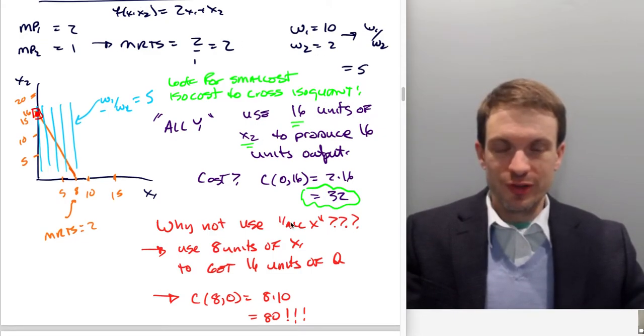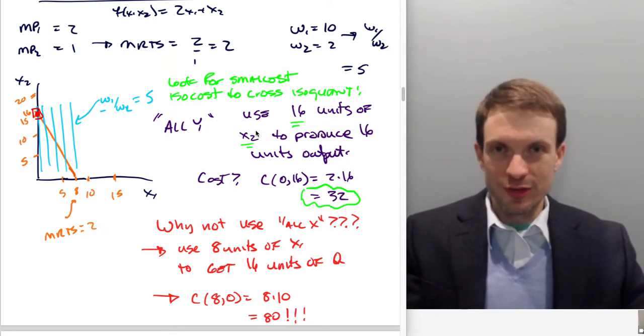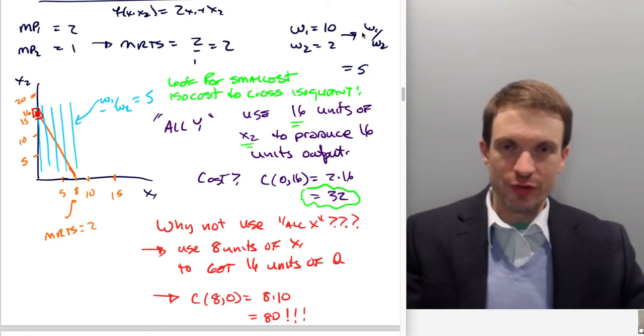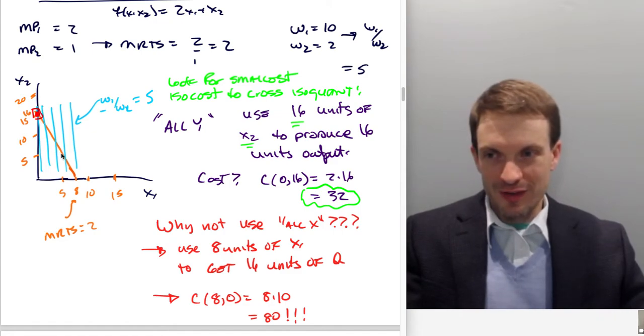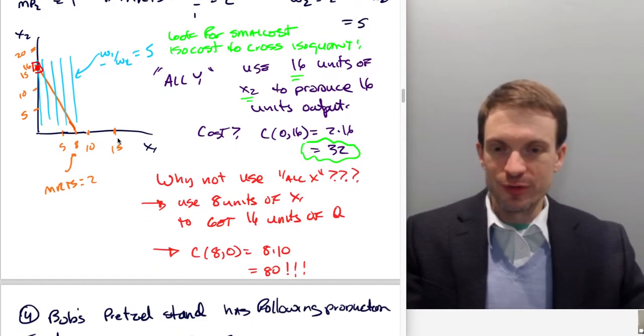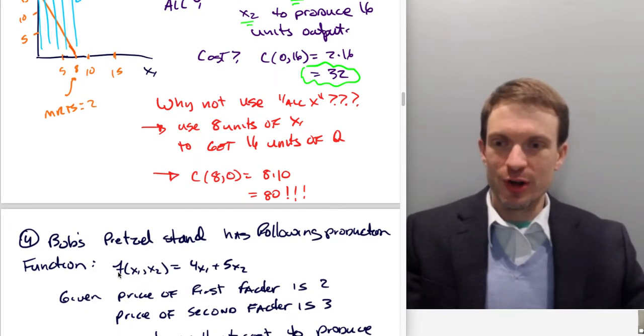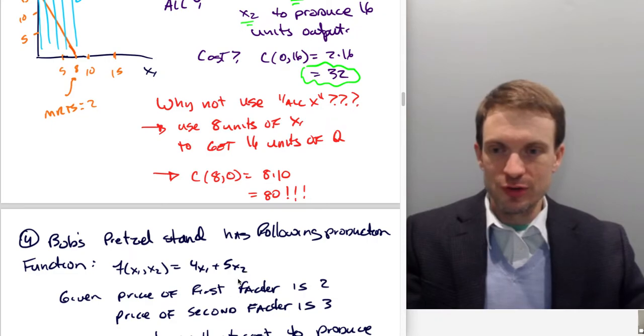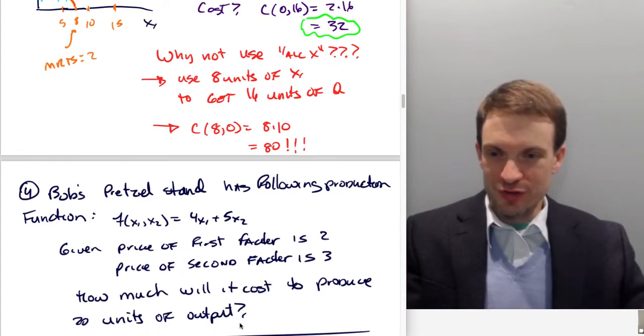There's something else that can happen, depending on having different, there's three ways that these slopes of isoquants and isocosts can match up. It can be that the isocosts are steeper. It could be that the isocosts have the same slope, in which case the smallest isocost is going to be coincident with the isoquant. Or the isocosts could be flatter. So let's see that situation. Suppose Bob's pretzel stand has the following production function: 4x1 plus 5x2. Given the price of the first factor is 2 and the price of the second factor is 3, how much will it cost to produce 20 units of output?